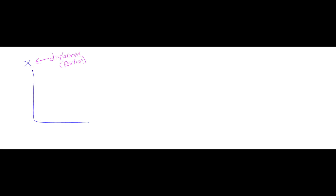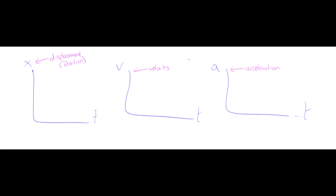So back to graphs. First of all, we need something to graph. In 1D motion, there are three things that we tend to graph: displacement (otherwise known as position), velocity, and acceleration. We like to look at how these things change over time, so we're going to plot them against time. How does your displacement from your origin change over a period of time? How does your velocity change? How does your acceleration change, or does it stay the same? These are the questions we answer by plotting these graphs.